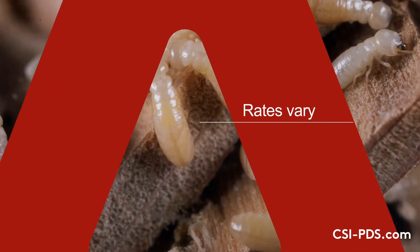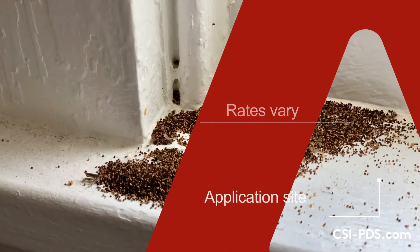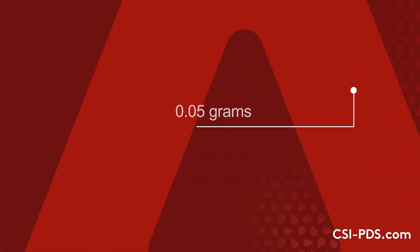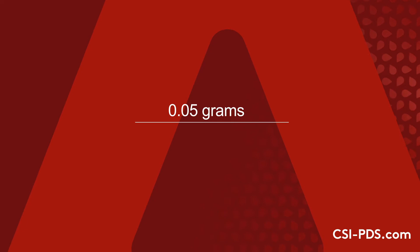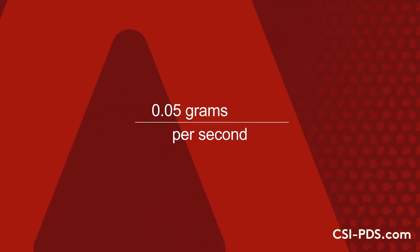Application rates vary based on the species of termite targeted and the location or application site where Taurus Dry is applied. The PDS will apply approximately 0.05 grams of Taurus Dry per second of trigger actuation time.